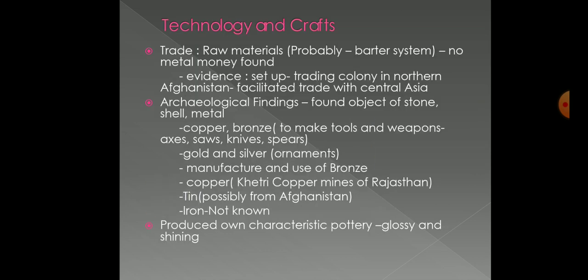Regarding technology and crafts: since there was a need for raw materials, people engaged in trade, probably through barter system, as no metal money has been found. Evidence of a trading colony in northern Afghanistan facilitating trade with Central Asia has been found. Archaeological findings of objects made of stone, shell, and metal reveal that the metals used were copper, bronze, gold, silver, and tin. Copper and bronze were used to make tools and weapons such as axes, saws, knives, and spears, while gold and silver were used for ornaments, sometimes with precious stones added.